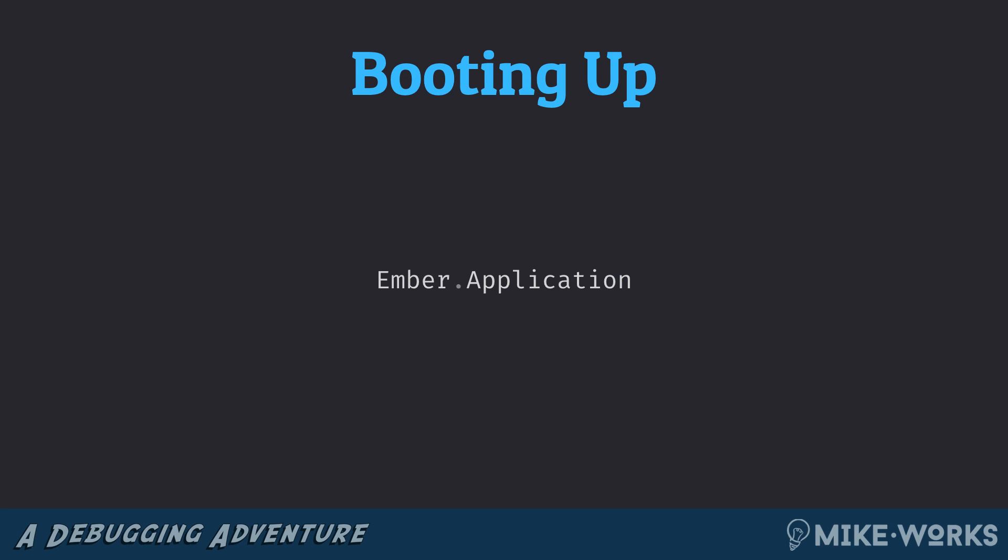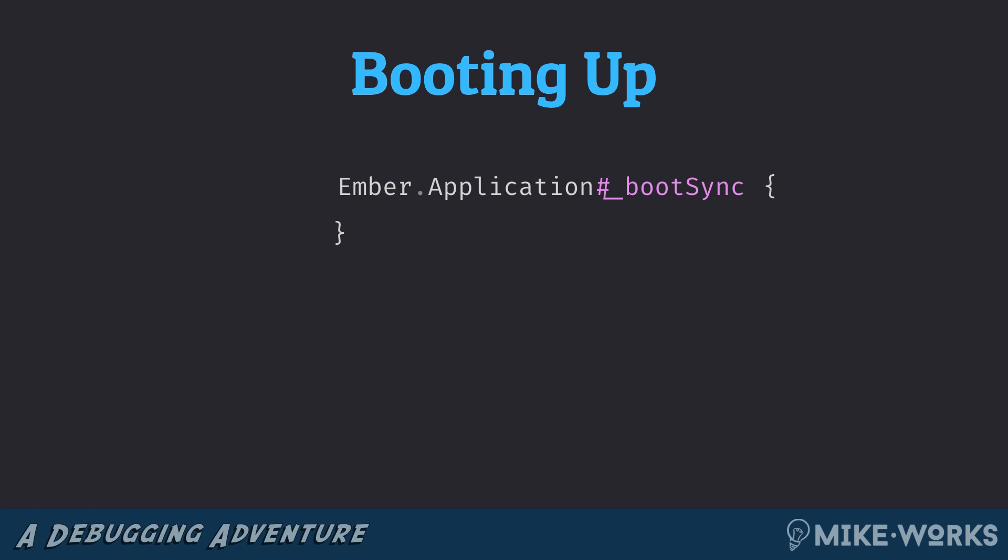The way an Ember application starts booting, it begins with a subclass of the Ember.application type. And the process starts with this underscore boot sync method, which typically, for the vast majority of Ember apps, will be called when a DOM ready event fires. If you're used to jQuery, this is like your jQuery ready — meaning all of the JavaScript has been downloaded and parsed and we're ready to start operating on a fully formed DOM.